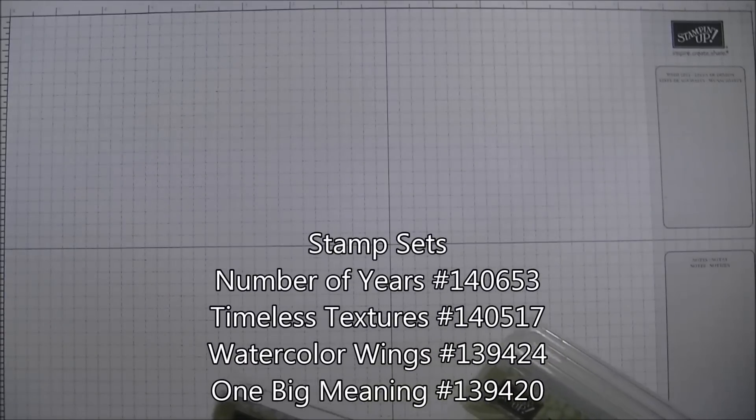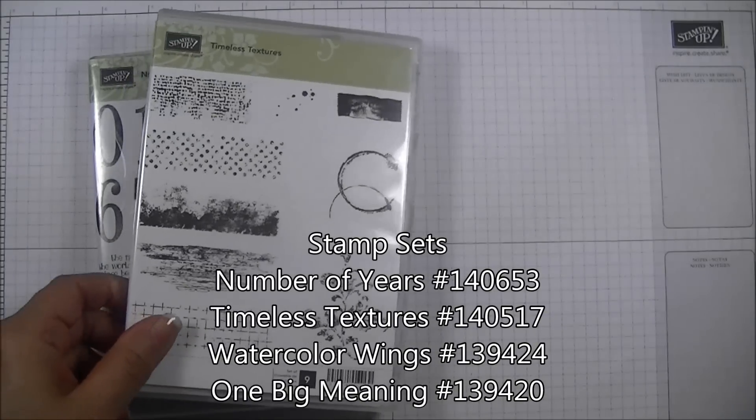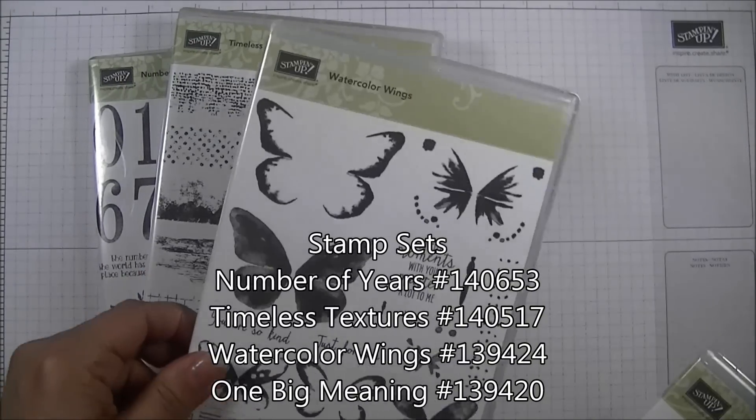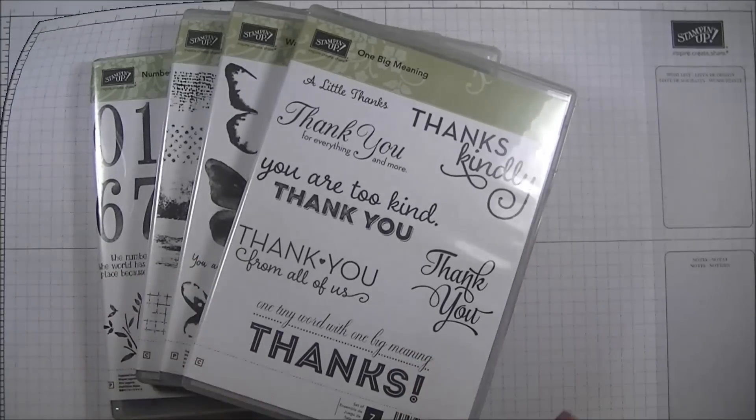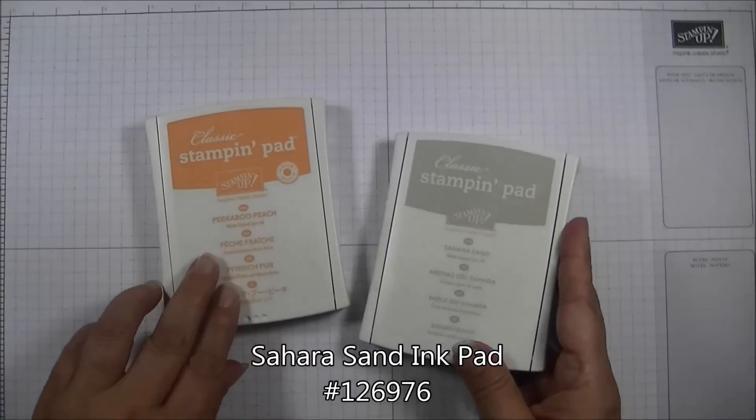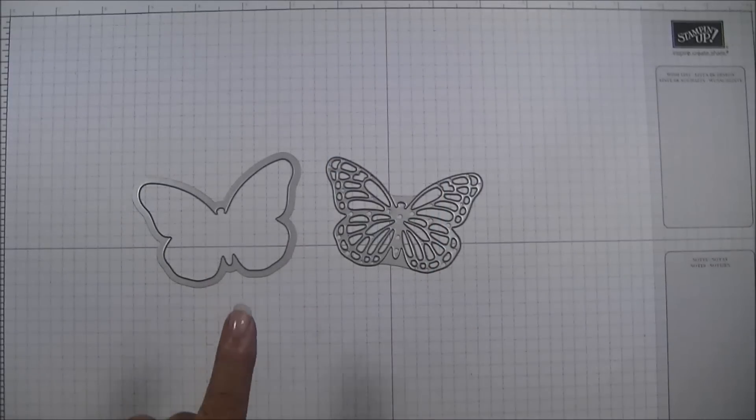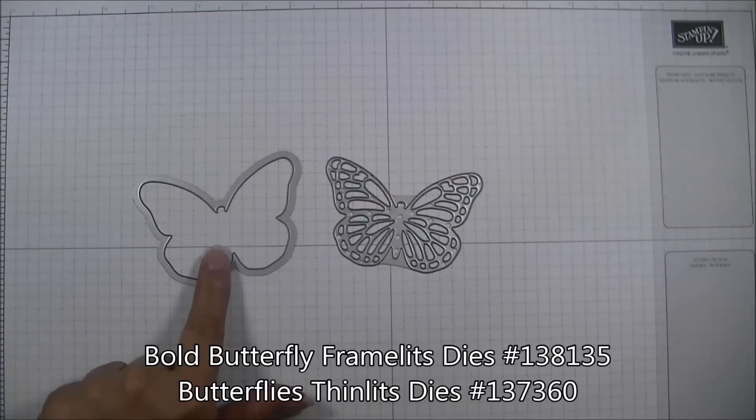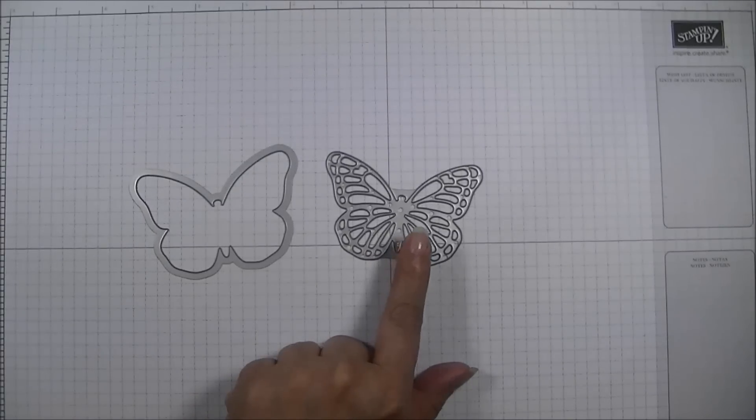The stamp sets that we will be using today are Number of Years, Timeless Textures, Watercolor Wings, and One Big Meaning. The ink pads that we are using today are Peekaboo Peach and Sahara Sand. We will be using a couple of the die pieces from the Bold Butterfly Framelits Dies and the Butterfly Thinlits Dies.